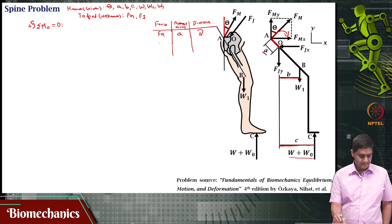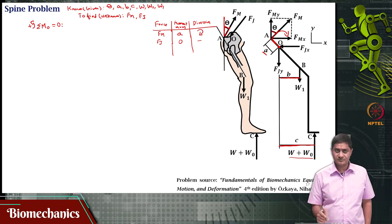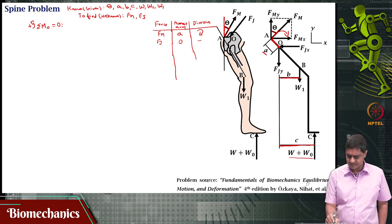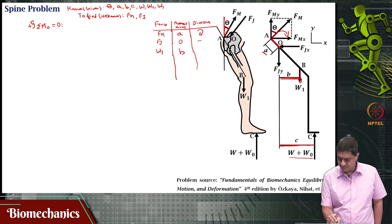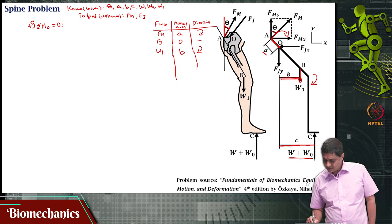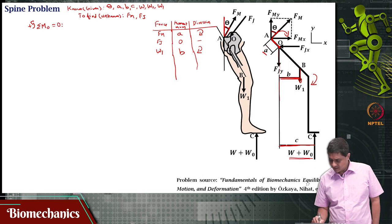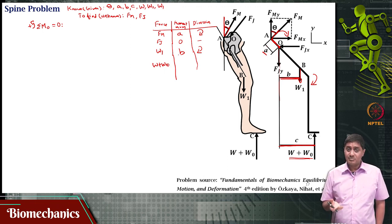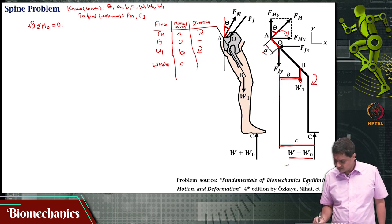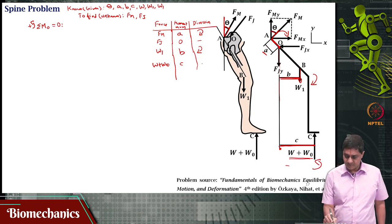W1 acts at moment arm small b and causes a clockwise moment. W plus W naught acts with moment arm small c — this is the weight of the person plus the weight being held — and that will cause a counter-clockwise moment.